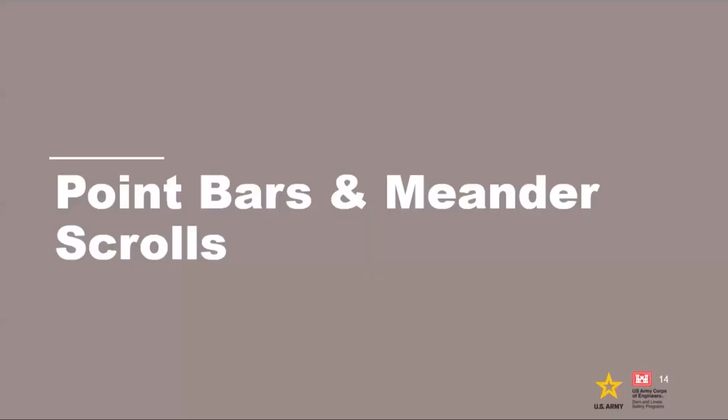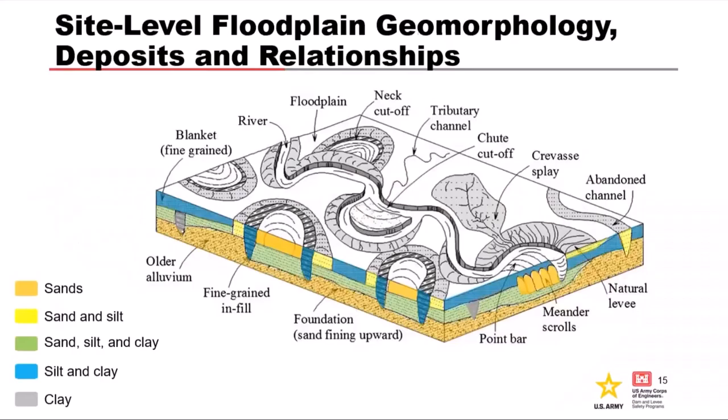Moving to the site-specific scale, we're going to talk quite a bit about point bars and meander scrolls, because these have a pretty strong control on the locations where we get backward erosion and piping — also known as under-seepage. Here's a three-dimensional block diagram of the various landforms you get with fluvial or riverine geomorphology processes.